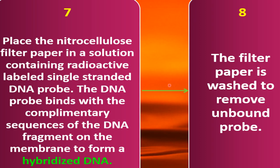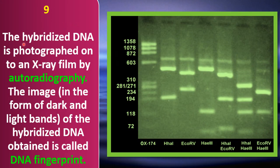In step 8, the filter paper (nitrocellulose membrane) is washed to remove unbound probe. In step 9, the hybridized DNA is photographed on an X-ray film by autoradiography. The image appears in the form of dark and light bands of the hybridized DNA on the X-ray film.